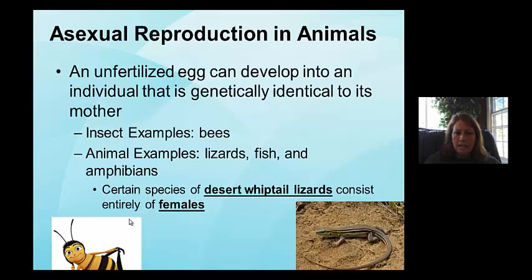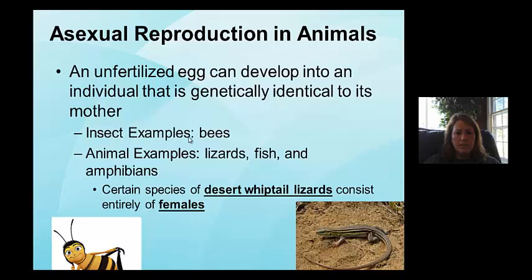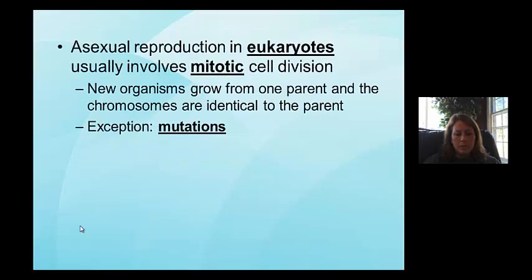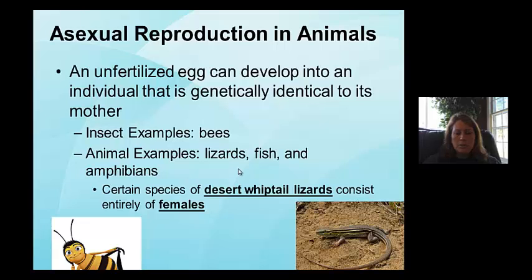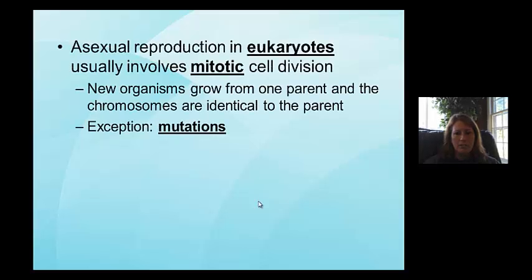In animals, with asexual reproduction, an unfertilized egg can develop into an individual identical to its mother. That unfertilized egg does not need to be fertilized by sperm. Examples include bees in the insect family, and in animals there are lizards, fish, and even amphibians. One notable species is the desert whiptail lizard, where the entire population consists of females — there are no males in that particular species.